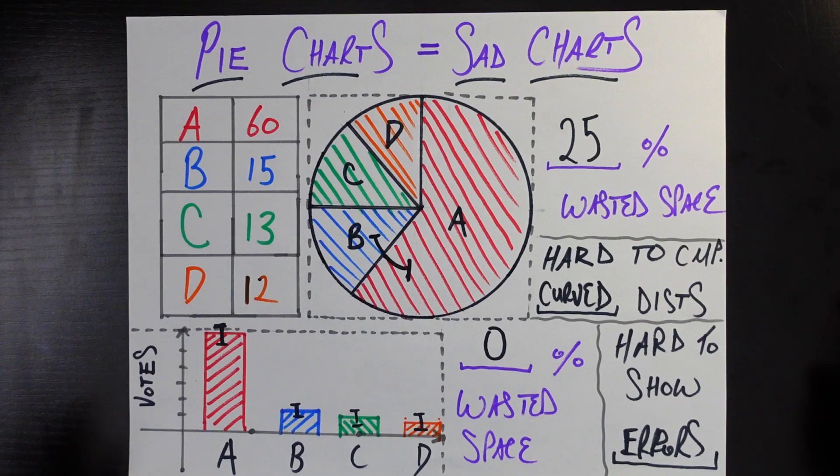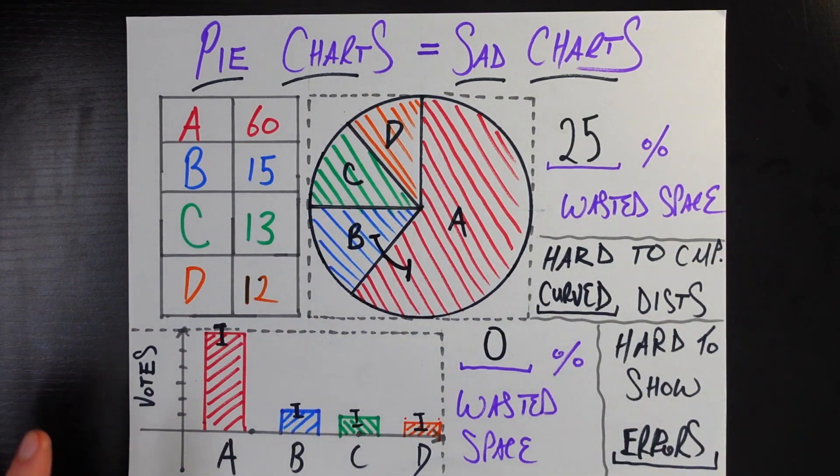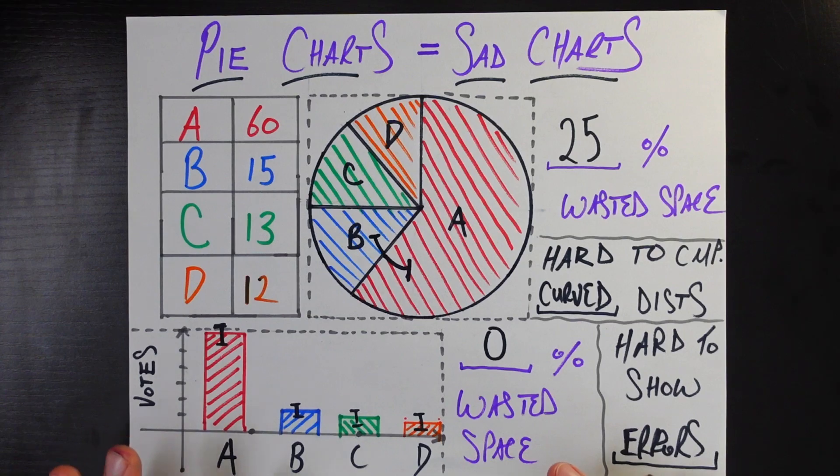But we could have a bar chart measuring, for example, the average speed limit in four US states. That's not parts of a whole. That's just the average speed limit in four categories. And that doesn't make sense to display via a pie chart. But that brings back the fact that bar charts can be used for different purposes. But pie charts just are understood as being parts of a whole.